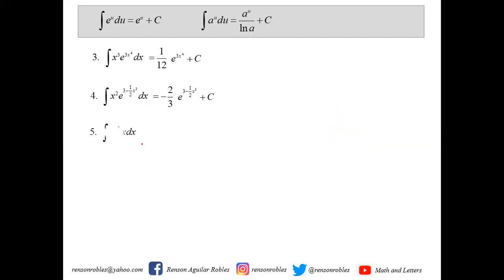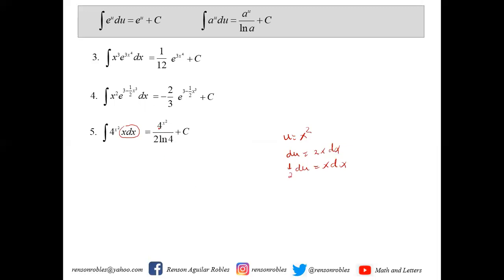Example five: we have the integral of 4 raised to x squared times x dx. We let u be equal to x squared because that will lead us to the integral of a to the u du. Then du is equal to 2x dx. Going back to the given, we only have x dx, so we multiply by 1 half: 1 half du is x dx. So we now have 4 raised to x squared all over 2 ln 4 plus c.